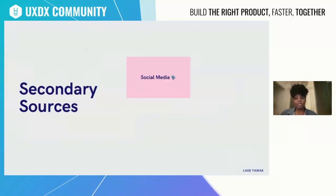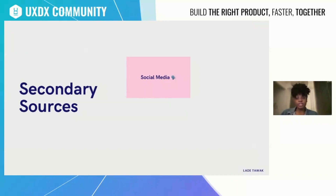Let's get into some examples of secondary sources. Think about the last time you had a bad experience with a product — where did you share it, maybe besides your group chats? Probably on social media. People share everything on social media: when you have a bad experience, when you have a good experience, the most likely place you go first, beyond your friends, is social media. 'I tried this new product, it was horrible, do not recommend' — all of that. So this is a very good source.